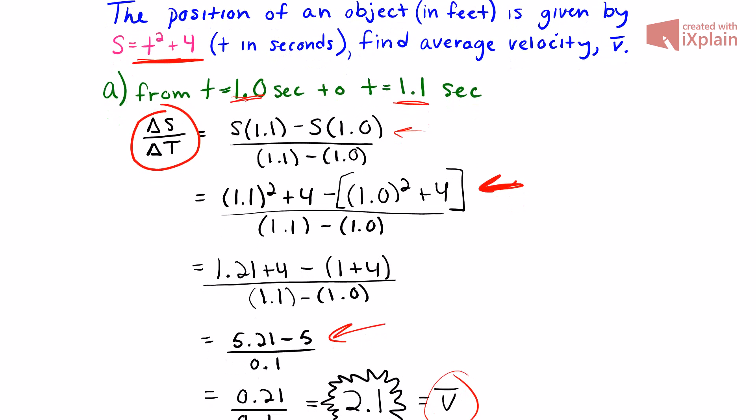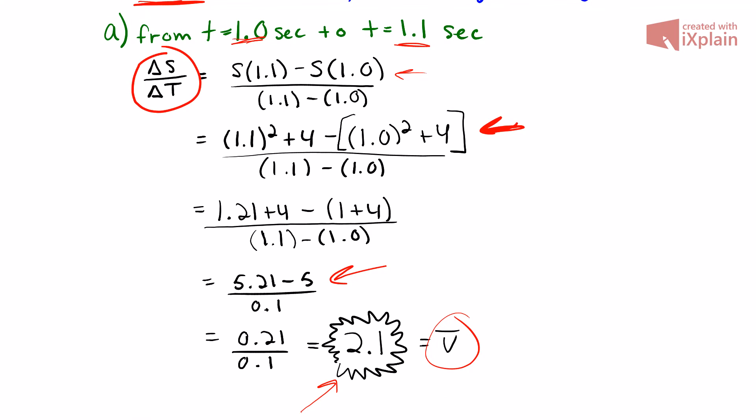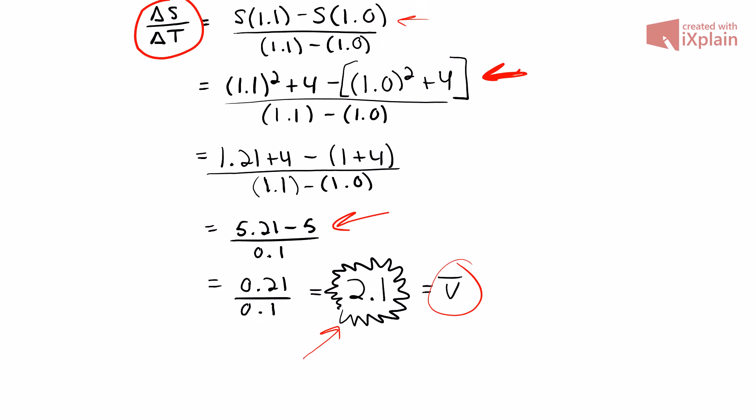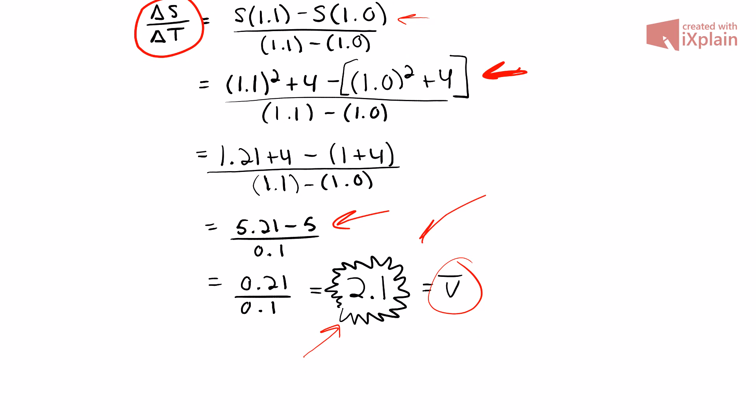To recap, all we did was take this formula, incorporate our final and initial values, subtract them out, do a little basic algebra, and that gave us our answer. 2.1 is our average velocity for this problem.